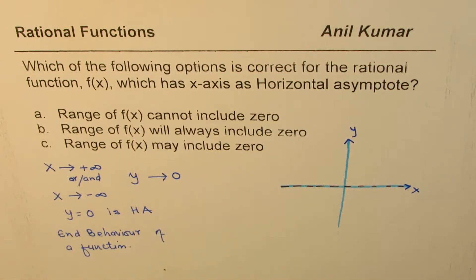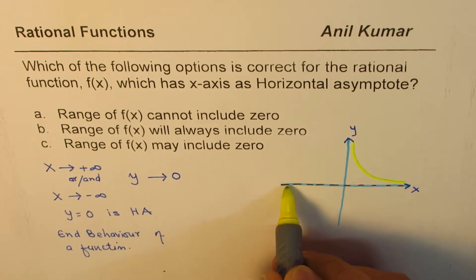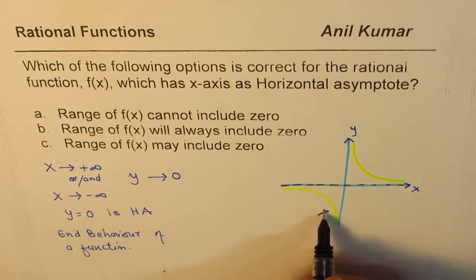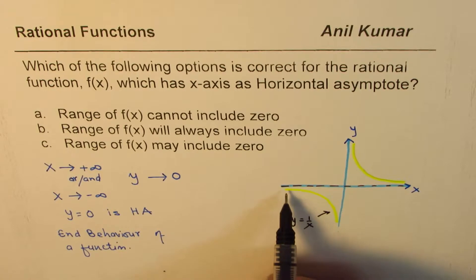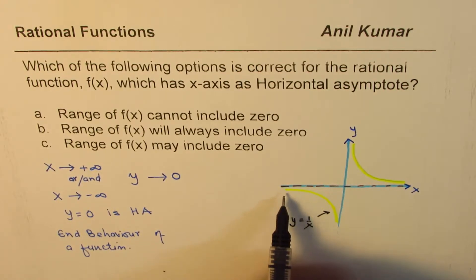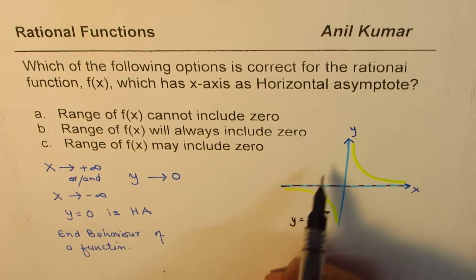Let me give you a few examples. If you take y equals 1 over x, this function is kind of like a hyperbola. For this function, as you can see, it approaches the horizontal asymptote y equals zero as x approaches positive or negative infinity.